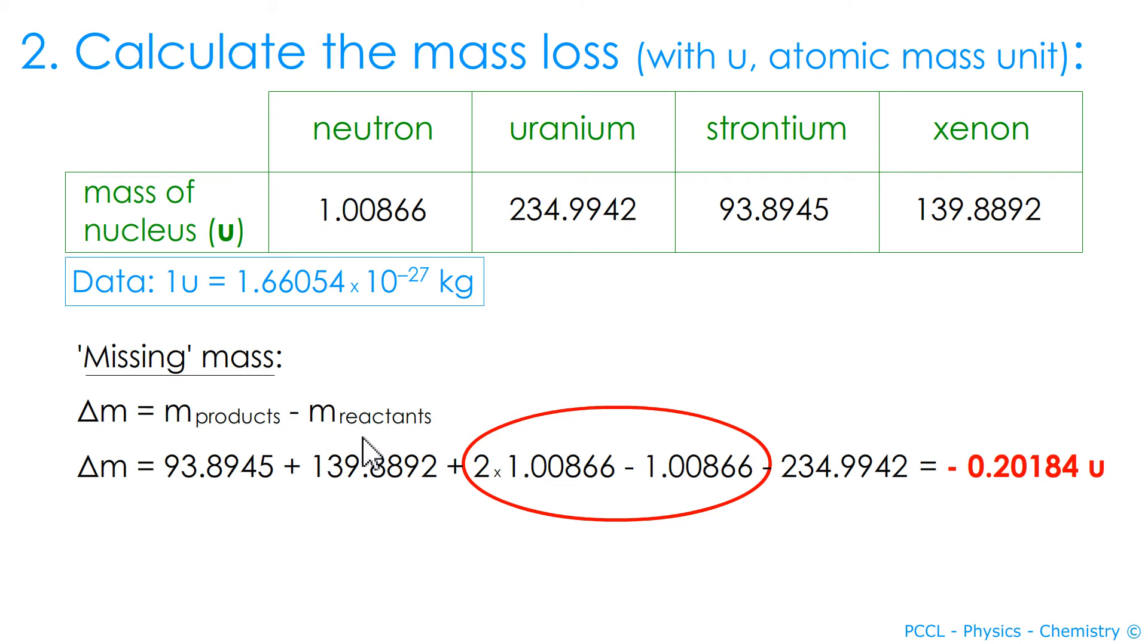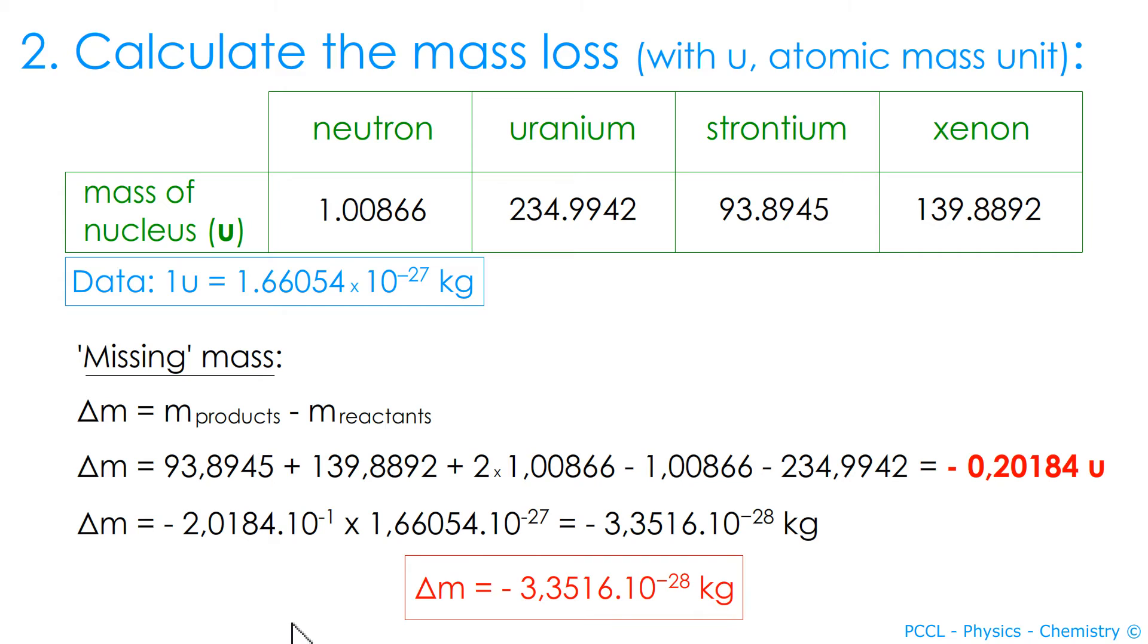Let's move on. Same remark as earlier, there are two neutrons minus one neutron. You find a mass loss in atomic mass unit. You convert and you find the same value to two decimal places.